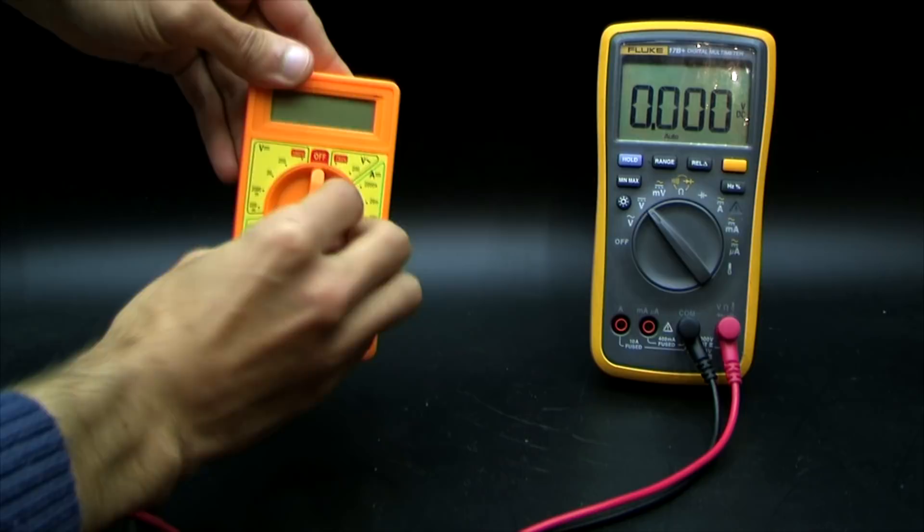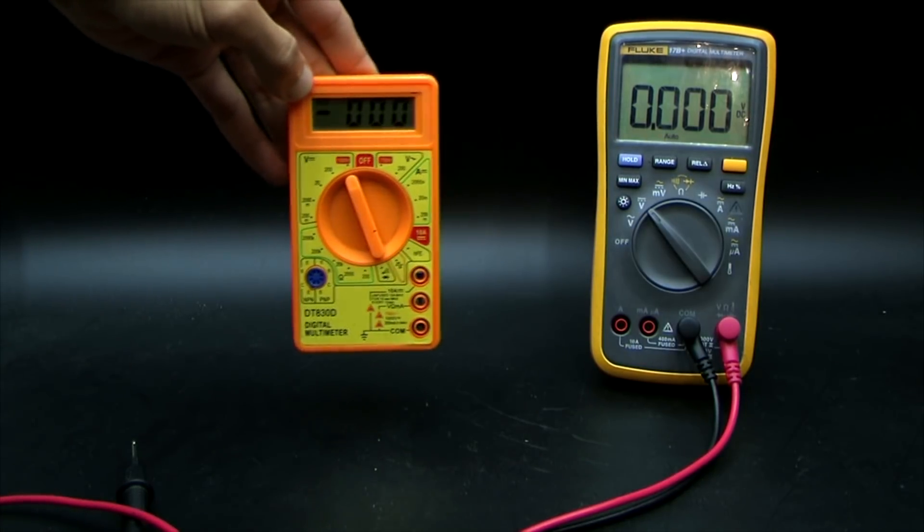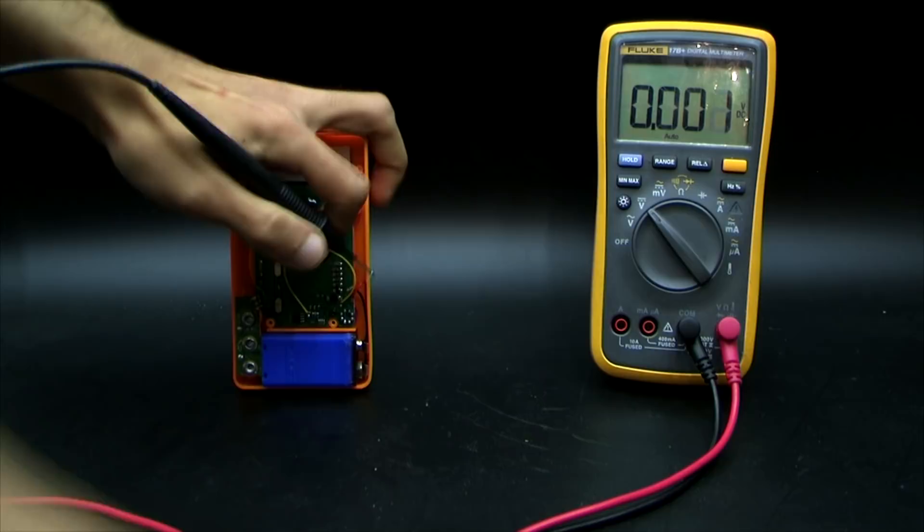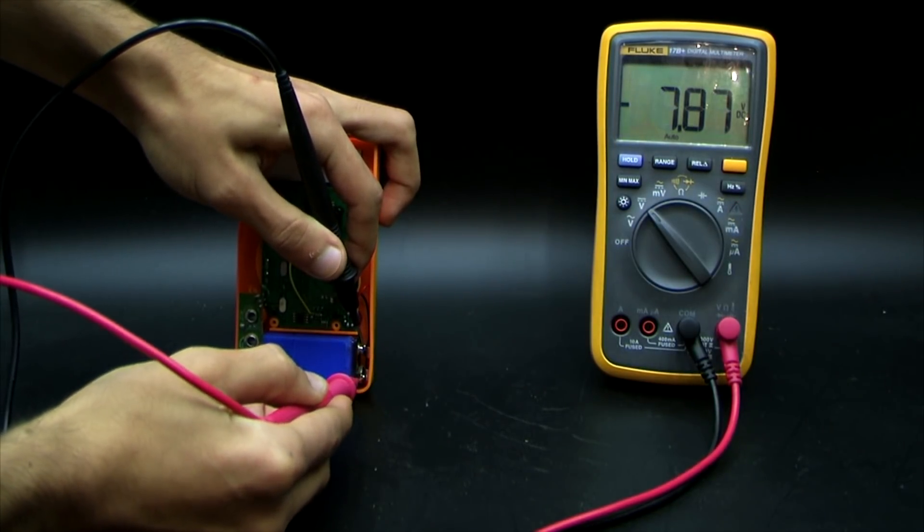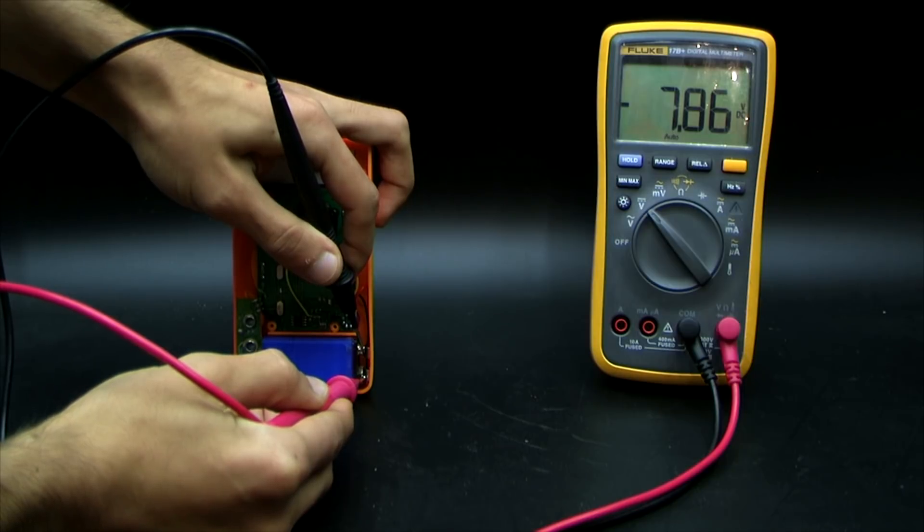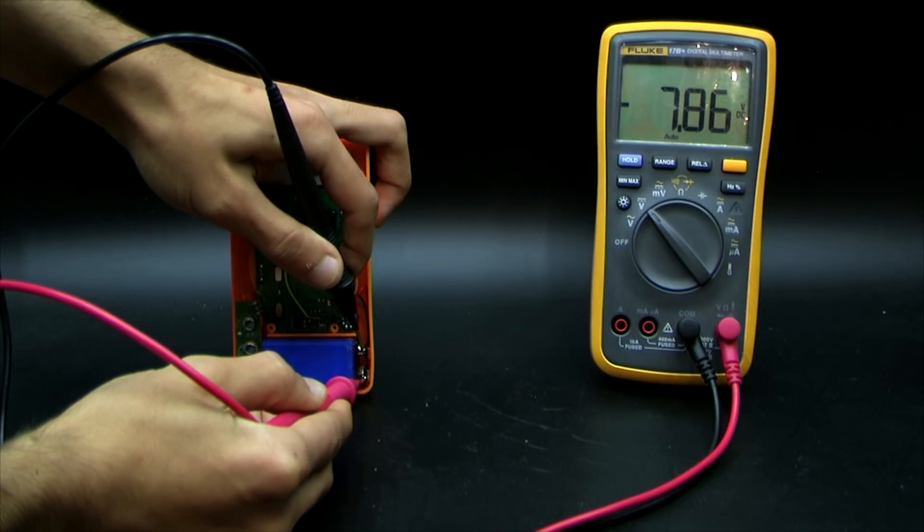Now we turn on the multimeter and check the battery voltage again. As we can see it is already around 9V which means that the system has reacted to the load and the converter has started up. Everything works fine otherwise the multimeter would show a low battery icon.